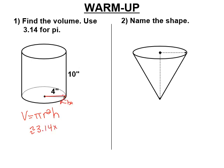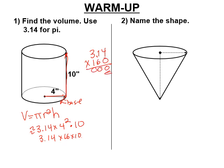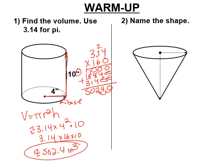The bottom is called the base. The radius of the base here is 4 inches, so it'll be 4 squared, and the height is 10. So it's 3.14 times 16 times 10. 16 times 10 is 160, so 3.14 times 160. Working through the multiplication, we get approximately 502.4 cubic inches in that cylinder.